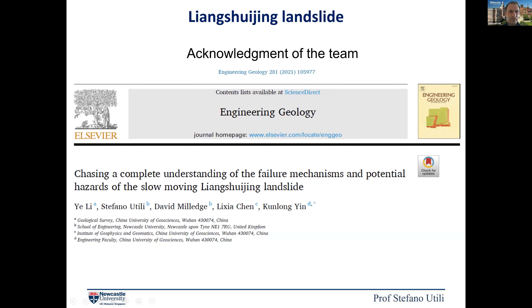Now moving to the topic — we're looking at a landslide that threatens a reservoir. Why are these dangerous? Starting from 1971, there was a landslide that went into an artificial lake in Peru in the Andes, and the consequence was a big wave that killed around 600 people.